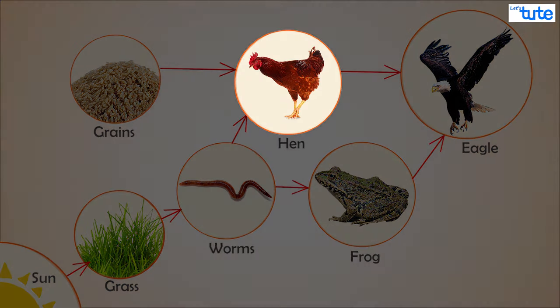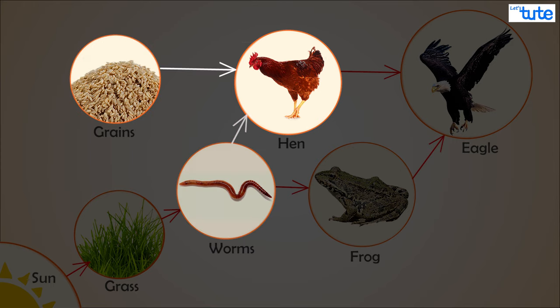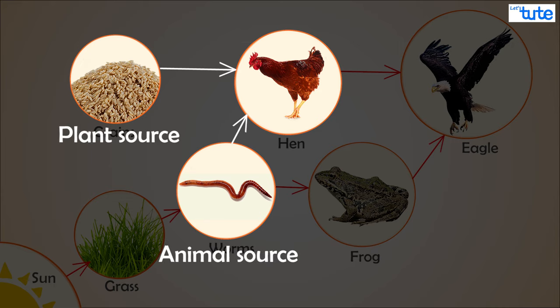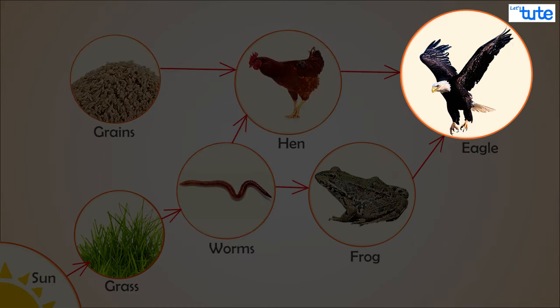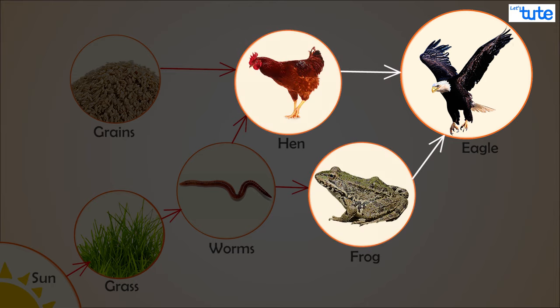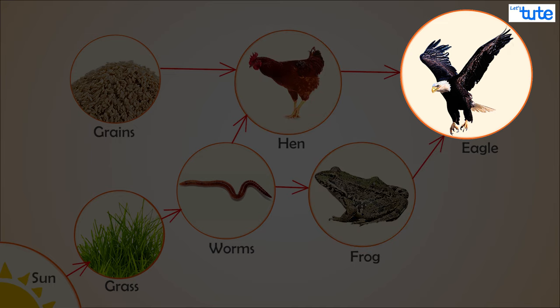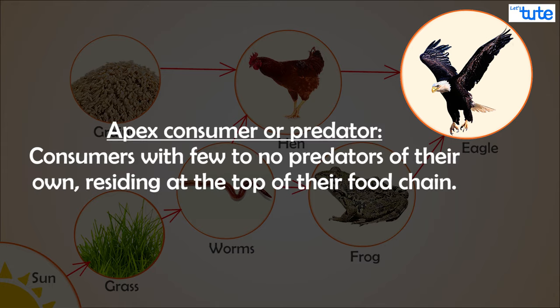In this food web, the hen feeds on both grain and worm — it obtains energy from both plant and animal sources, and hence is an omnivore. Observe the eagle in our example: in all the food chains it is a predator, meaning it only feeds on other organisms and is not food or prey for any other organism.